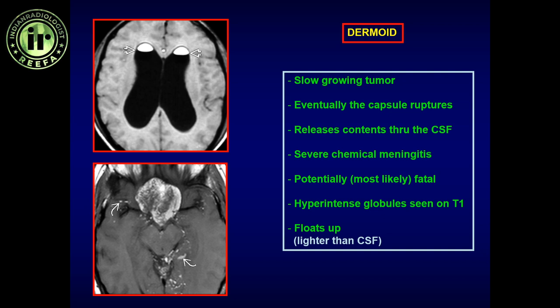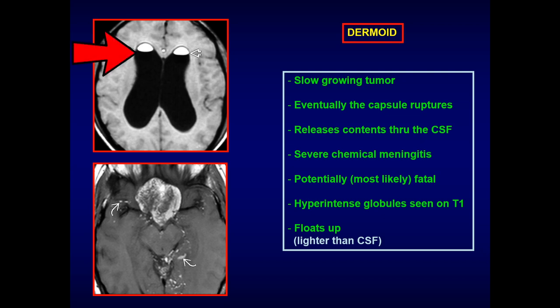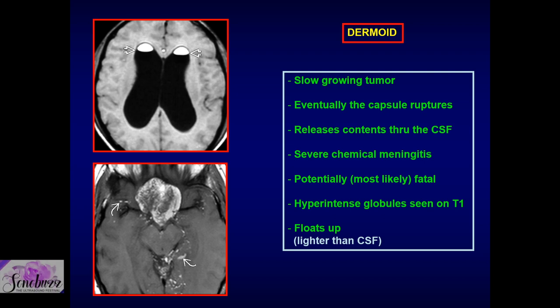It can potentially rupture. When it does rupture, hyperintense droplets are seen diffusely within the CSF spaces. Being lighter than CSF, they float superiorly rather than settling dependently. In the lateral ventricles, the T1 hyperintensity floats in the frontal horn. When the patient is supine, it floats up anteriorly. This causes severe chemical meningitis, which is potentially — if not almost always — fatal.